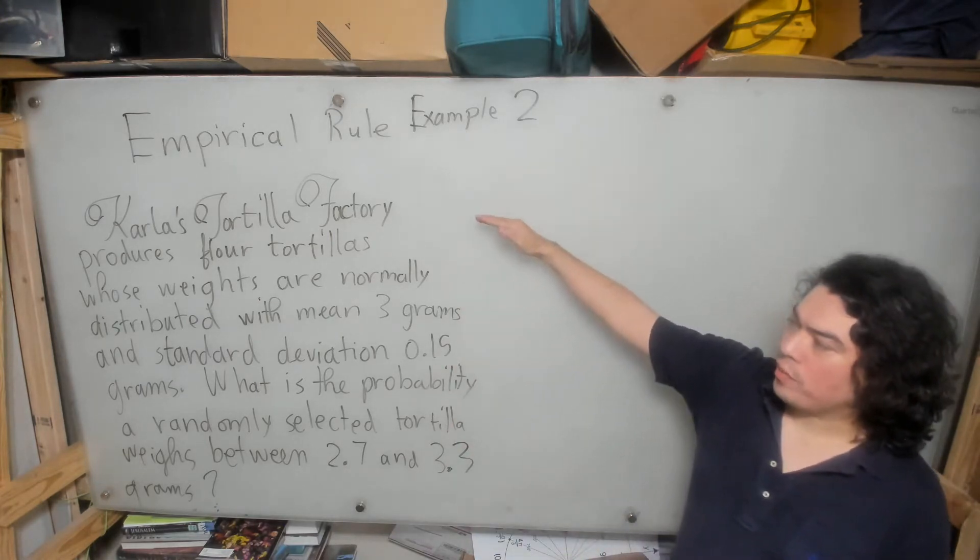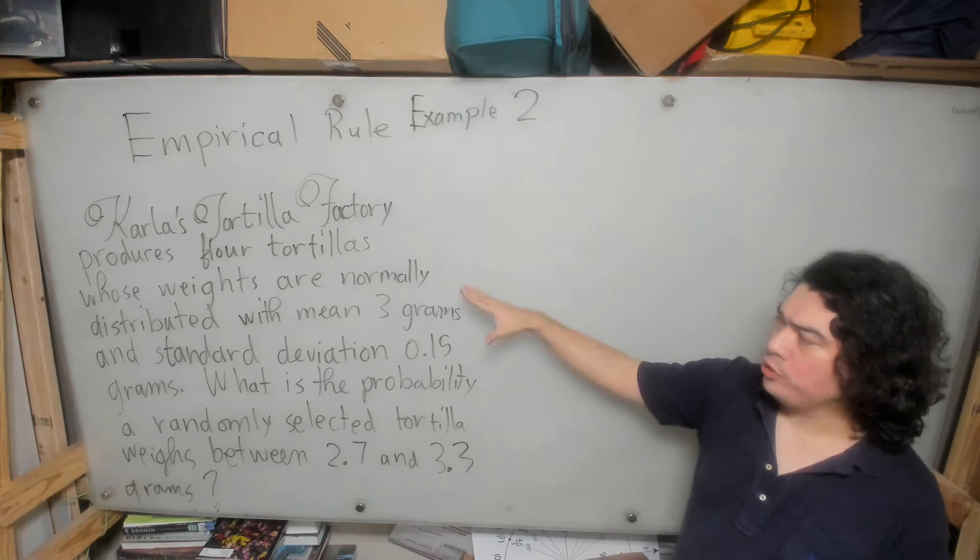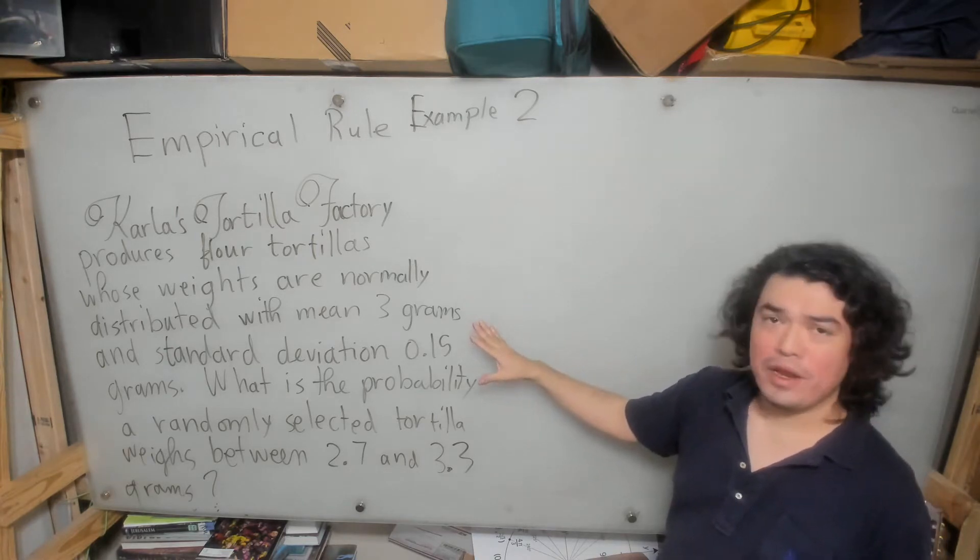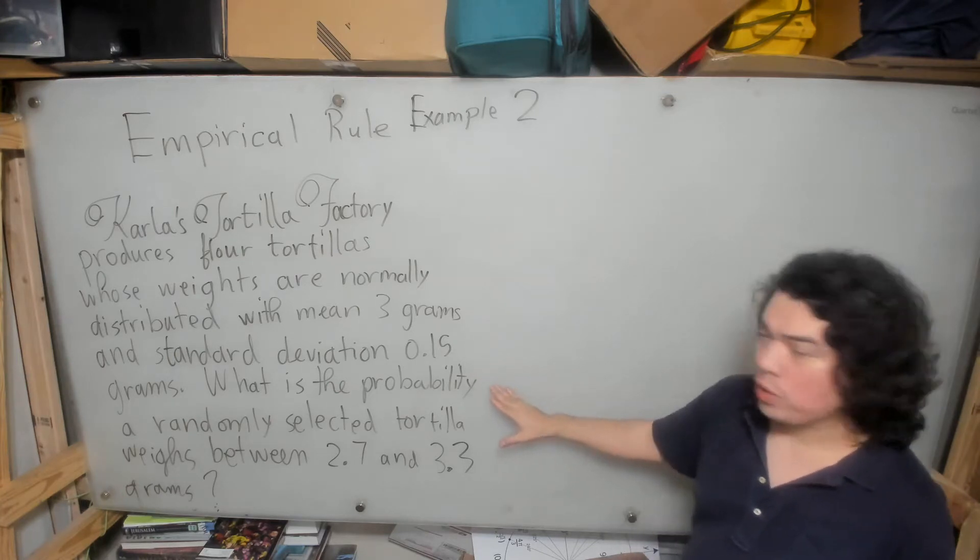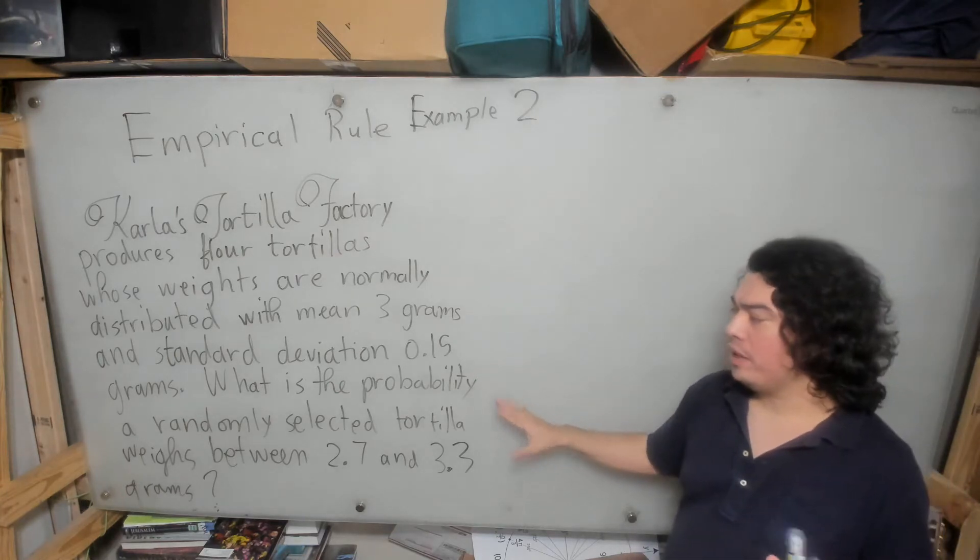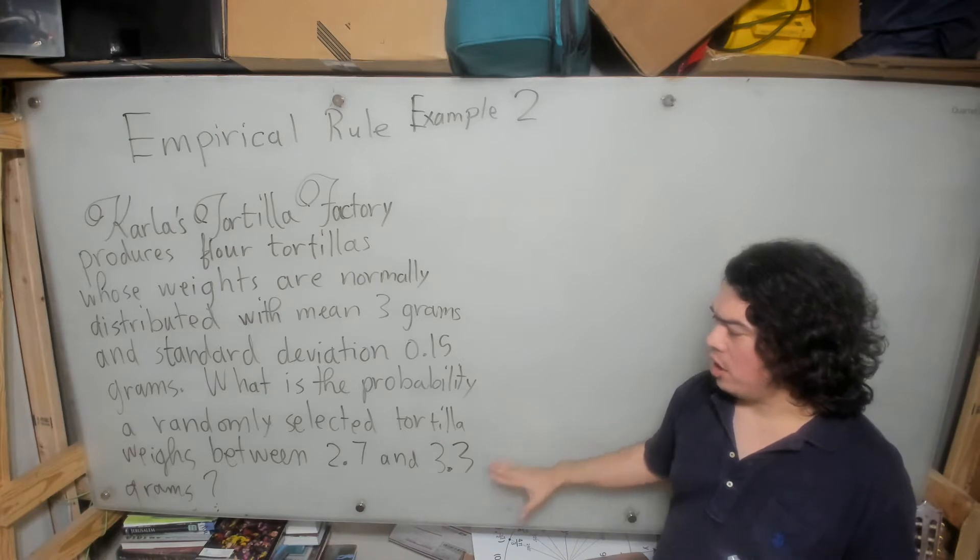Carlos Tortilla Factory produces flour tortillas whose weights are normally distributed with mean 3 grams and standard deviation 0.15 grams. The question is, what is the probability a randomly selected tortilla weighs between 2.7 and 3.3?